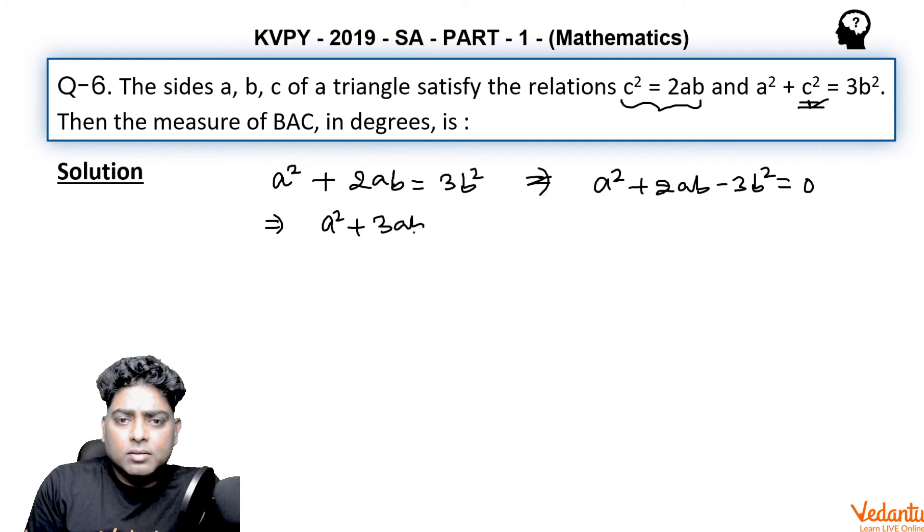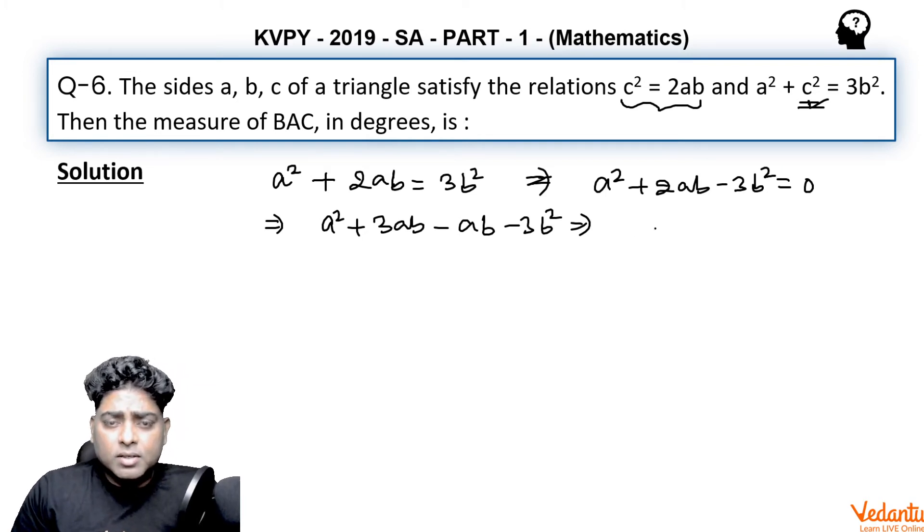Like 3ab minus ab minus 3b². So if I take A common then A plus 3b will come out, and from the next two terms, I will take B common, A plus 3b.